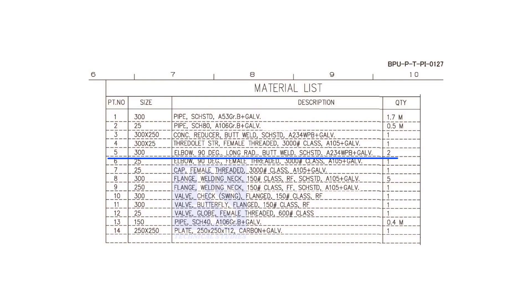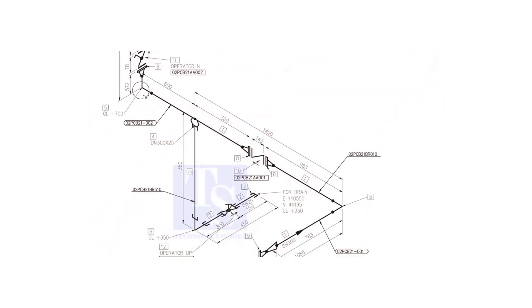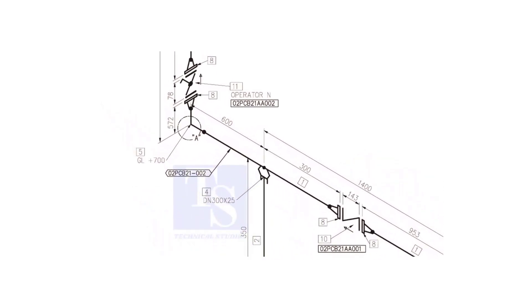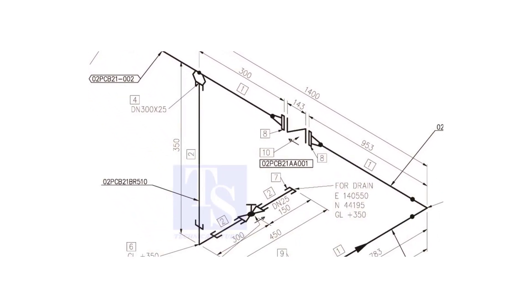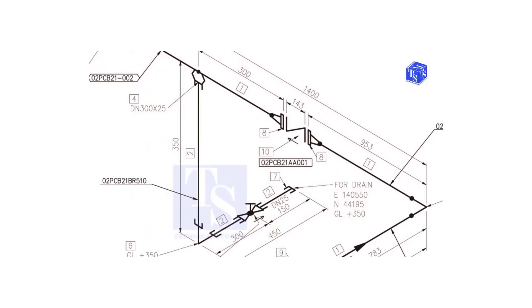Let us check where the other elbow is. It comes here. It comes here. We already know what item number 1 is.